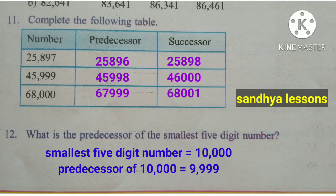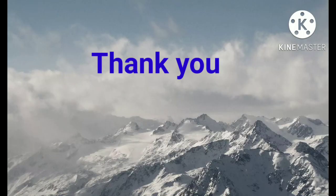Twelfth question: what is the predecessor of the smallest five-digit number? The smallest five-digit number is 10,000. Therefore, the predecessor of 10,000 is 9,999. Thank you for watching.